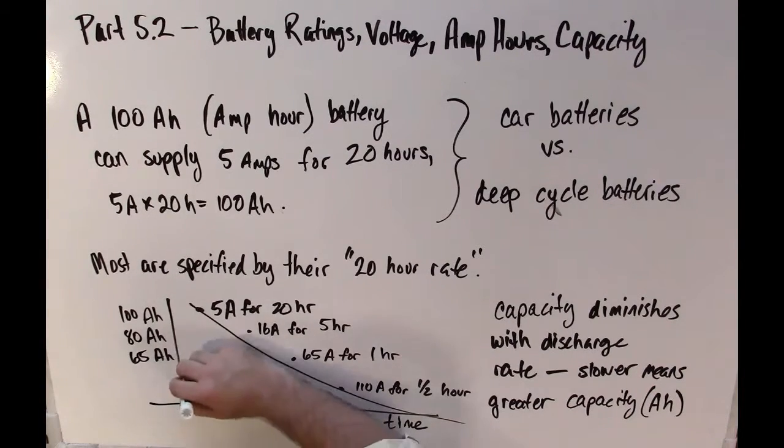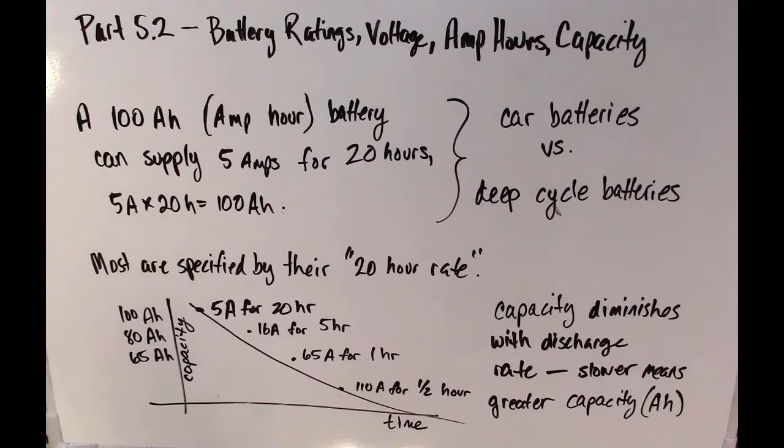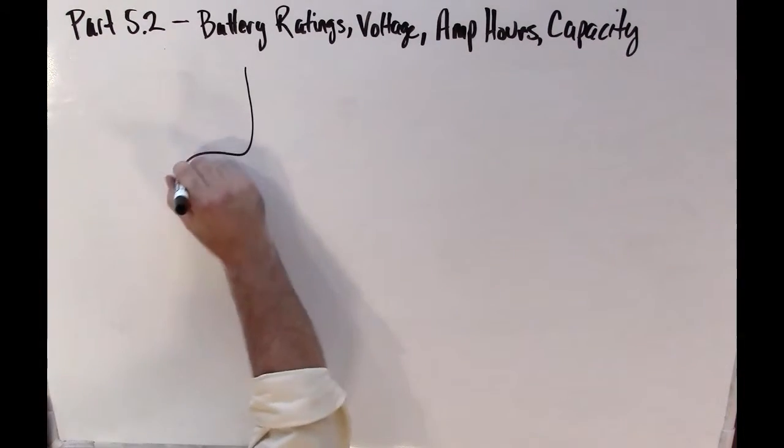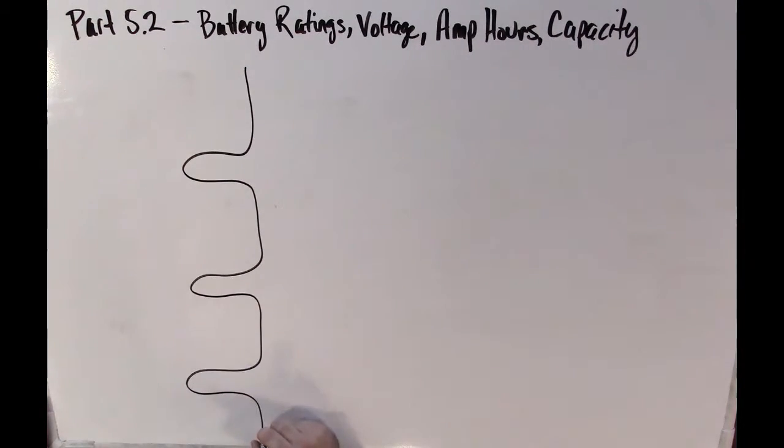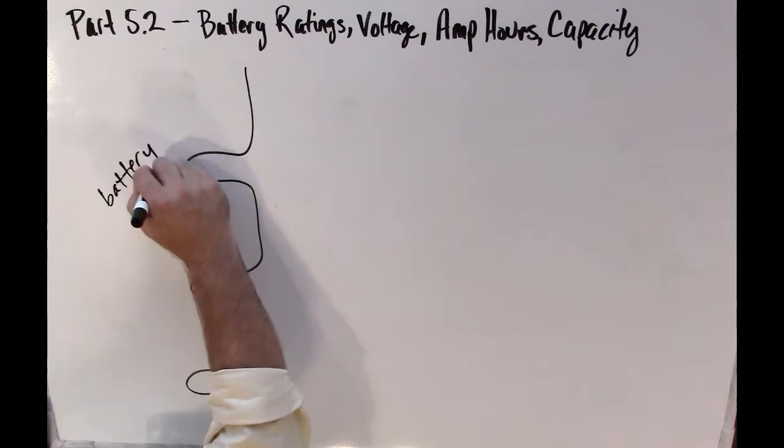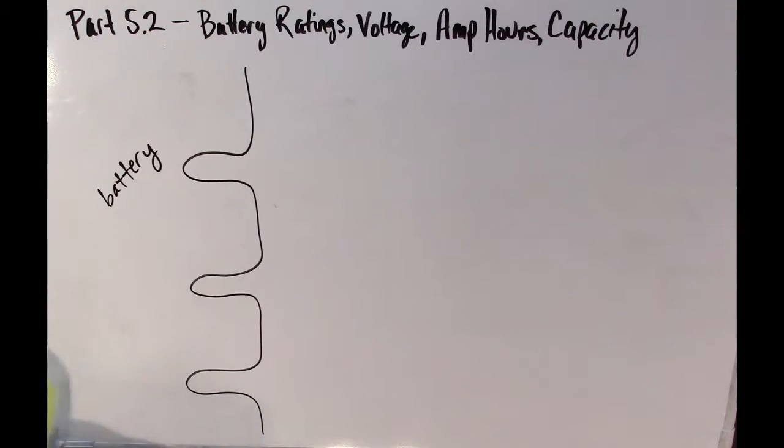So let me label these axes here. Now, the reason that battery capacity diminishes as you discharge the battery faster is because, see, over here on the left, I'm drawing the battery plate.